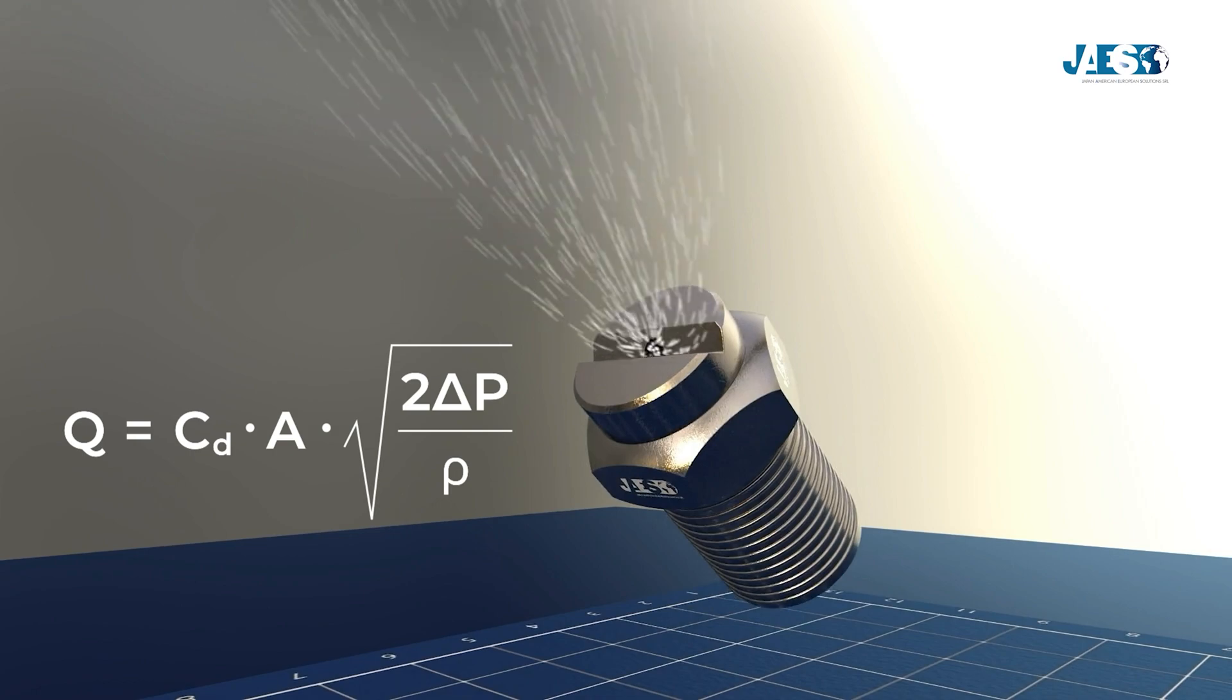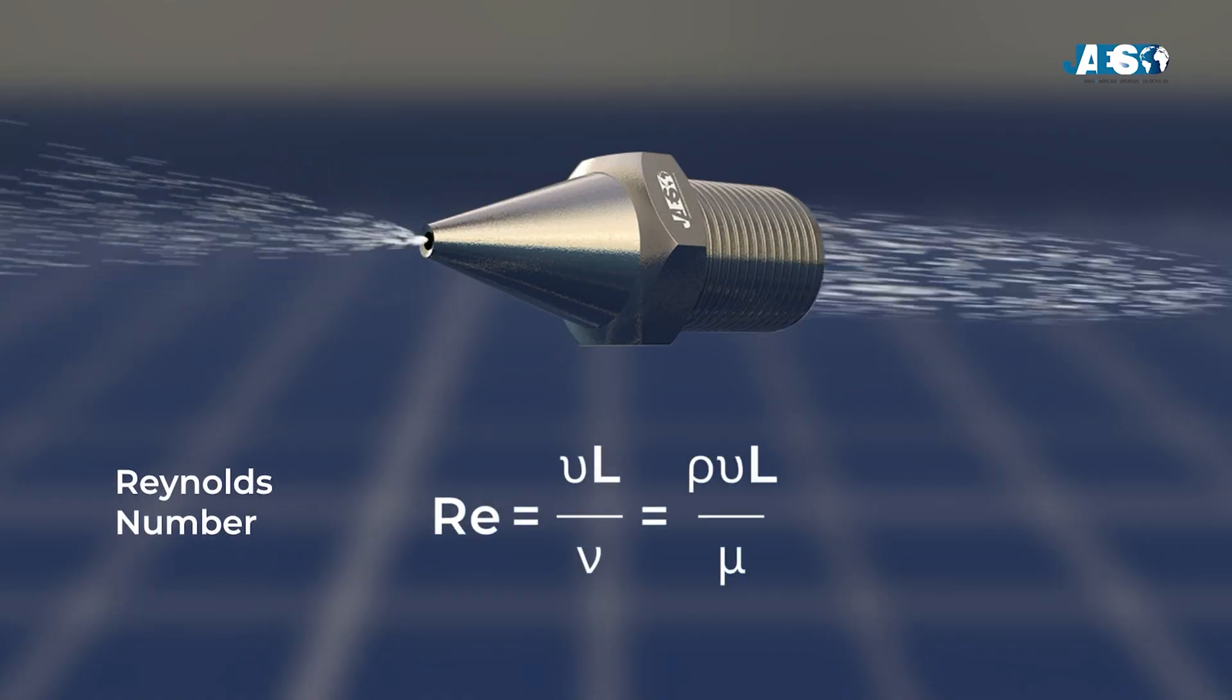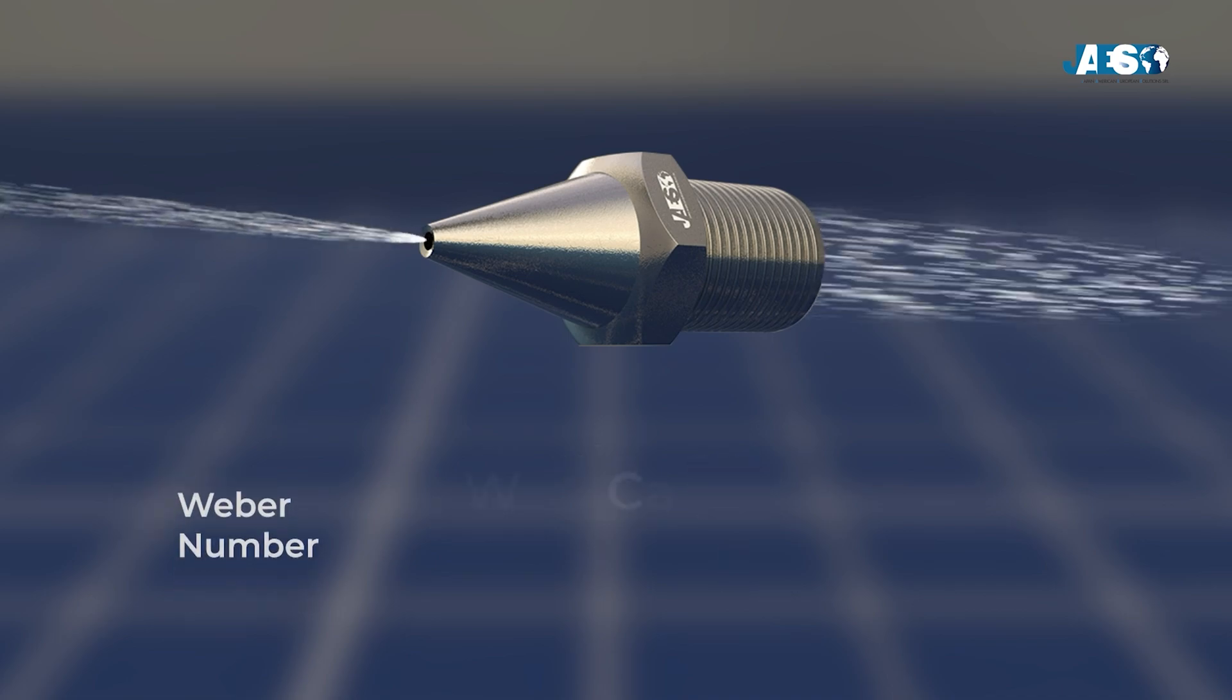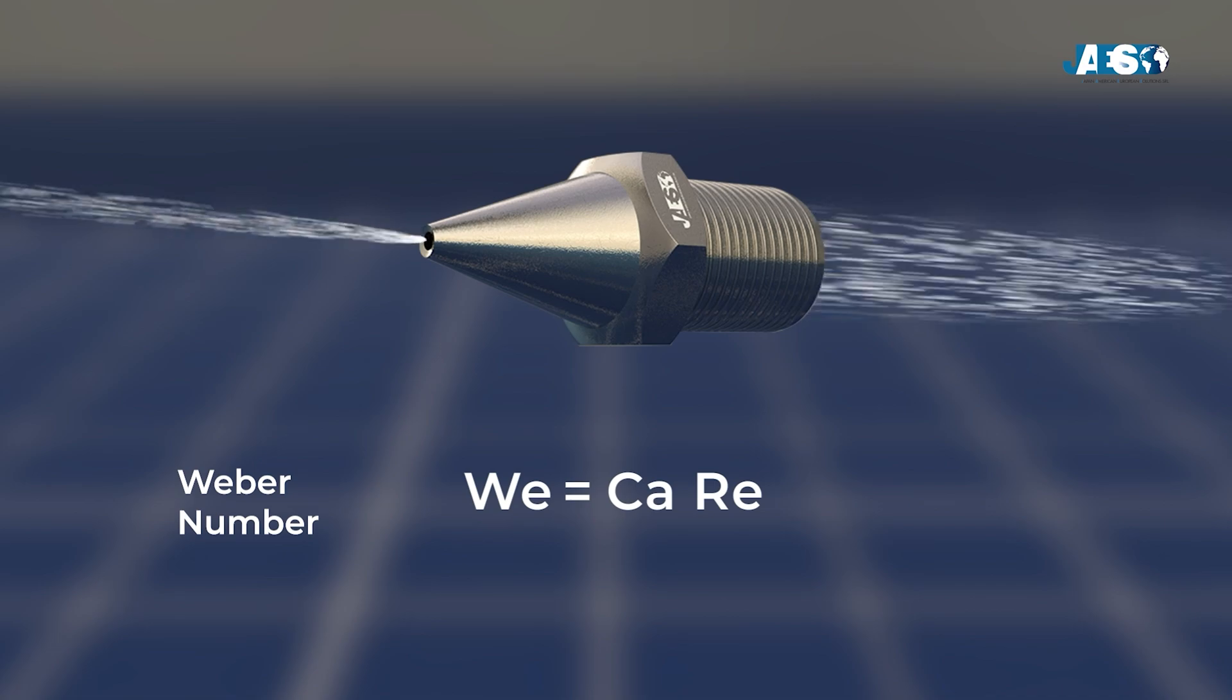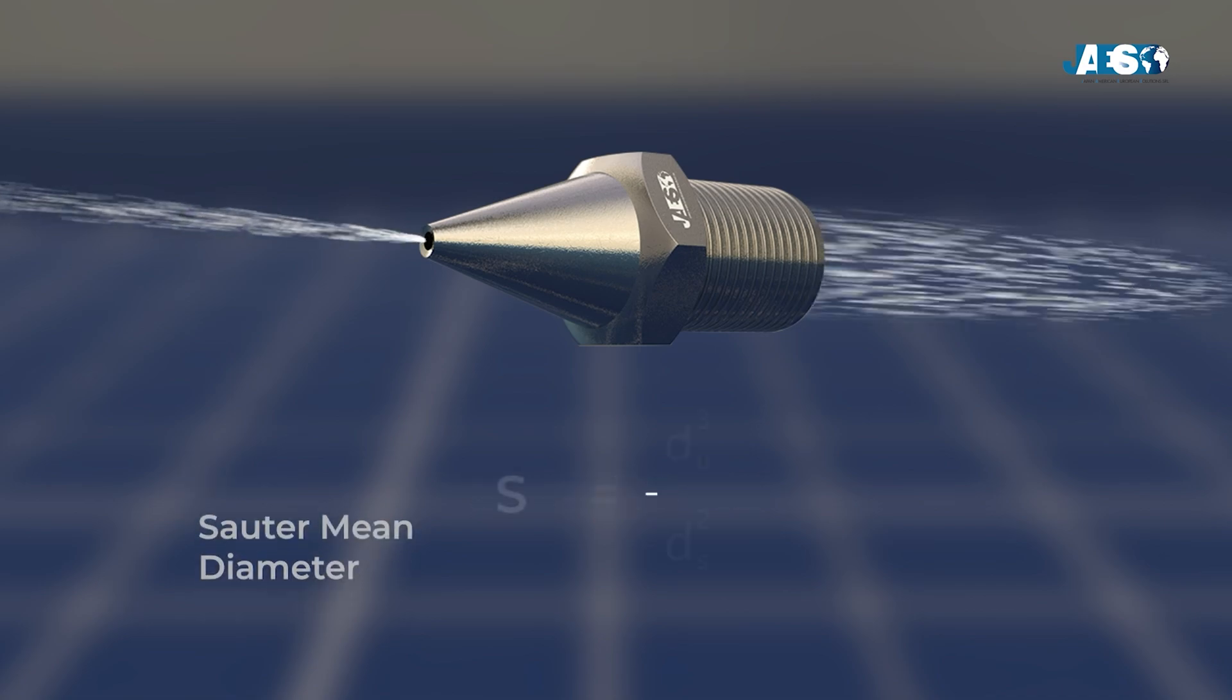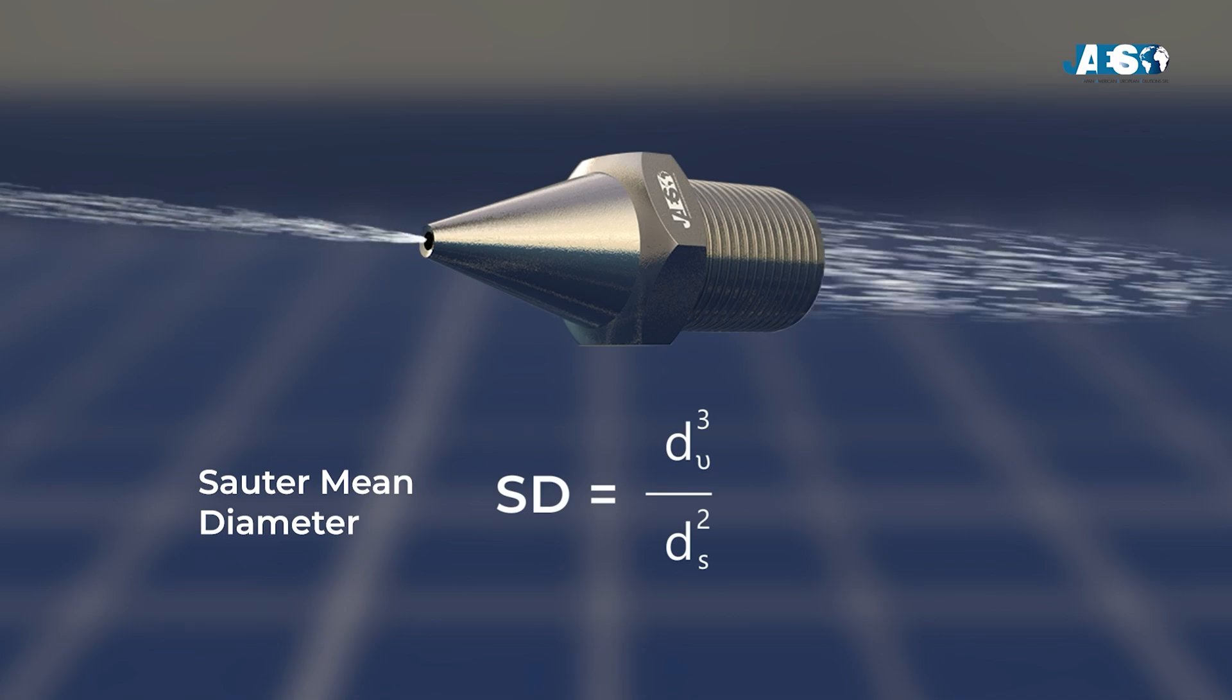In addition to the main formula for calculating flow rate, studies on nozzle atomization include Reynolds number or RE indicating the flow regime, laminar or turbulent. Weber number or WE measures inertial versus surface tension forces critical for droplet formation. Souter mean diameter or SMD indicates average droplet size based on energy, density, and viscosity.